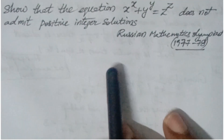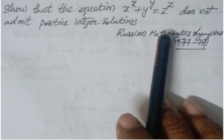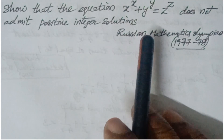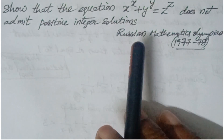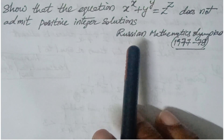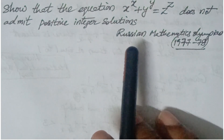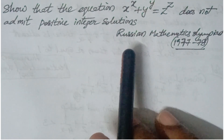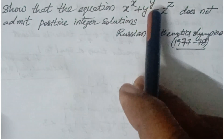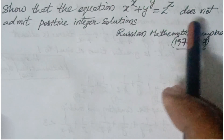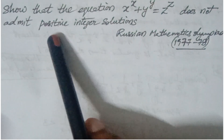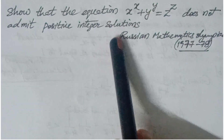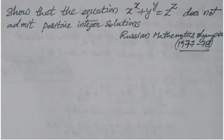Welcome back to IonCGMAX. We are looking at a question from a Russian mathematics column. The question involves an exponential equation — I personally found this question very interesting. In the following problem, an equation is given: x to the power of x plus y to the power of y plus z to the power of z. You have to show that it does not admit positive integer solutions.